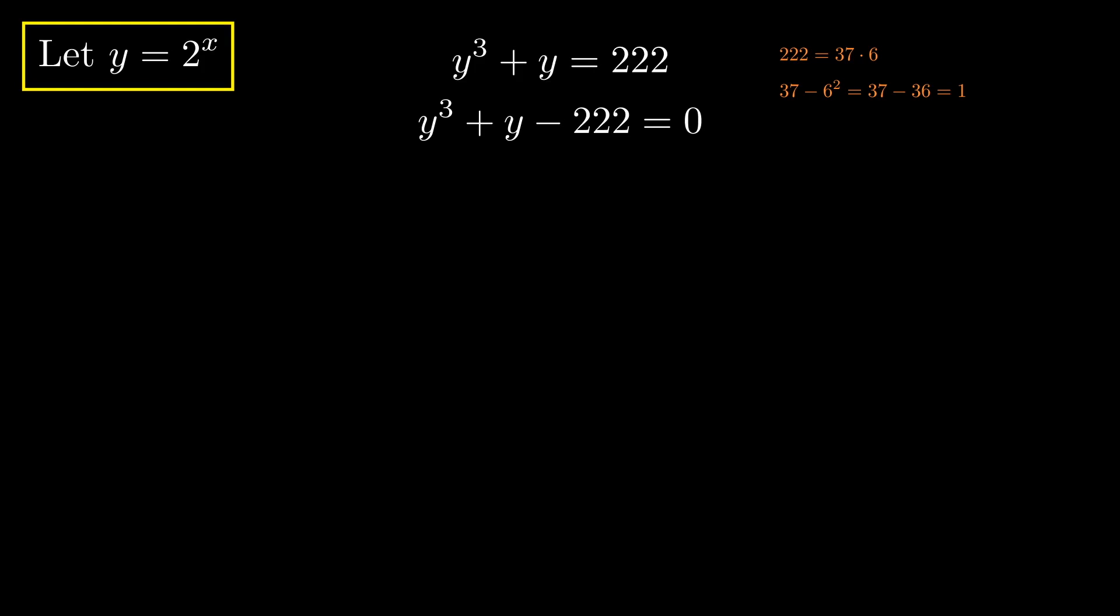Which, on the surface, feels like nothing, but once we split it up like this, once we rewrite one y as minus 36y plus 37y, we can factor a y out from the first two terms, and a 37 out from the second two terms.